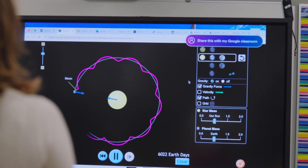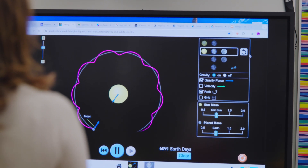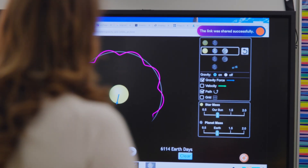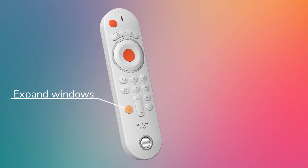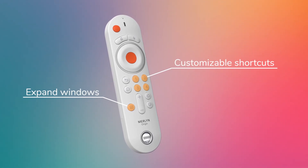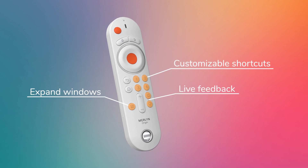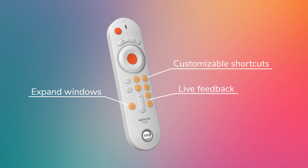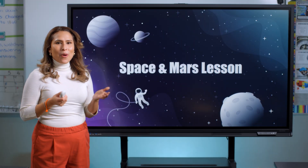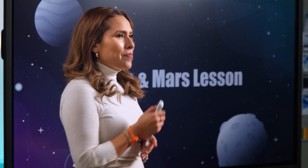Share this with my Google Classroom. The remote also functions as an air mouse, so you can point and click and navigate. There's also a button to expand Windows, customizable shortcut buttons, and a thumbs up and down button for providing feedback on the AI responses in real time. Now you're ready to leverage the power of AI during active instruction time.